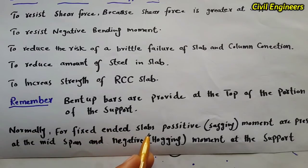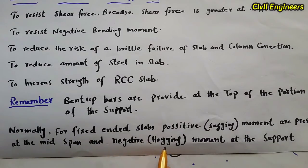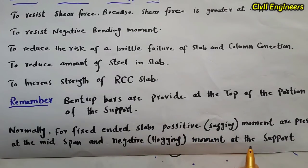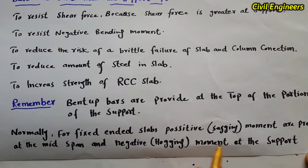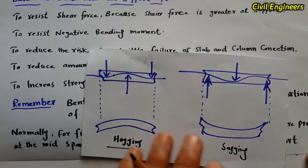Normally, for fixed-ended slabs, positive sagging bending moments are present at the mid-span, and negative hogging bending moments are present at the support. The negative bending is called hogging, and the positive bending is called sagging. So hogging moment is at the support and sagging moment is at the mid-span.